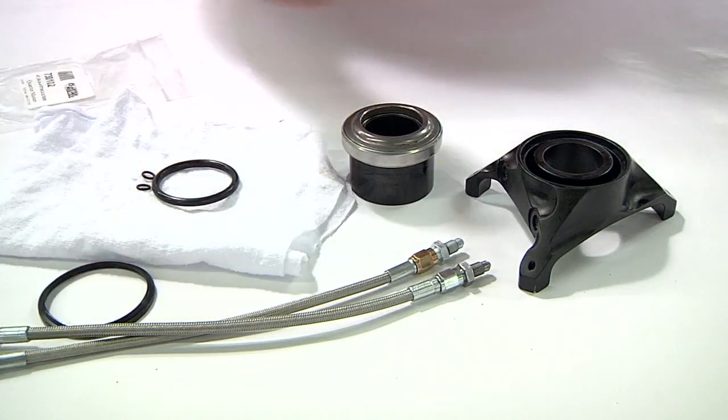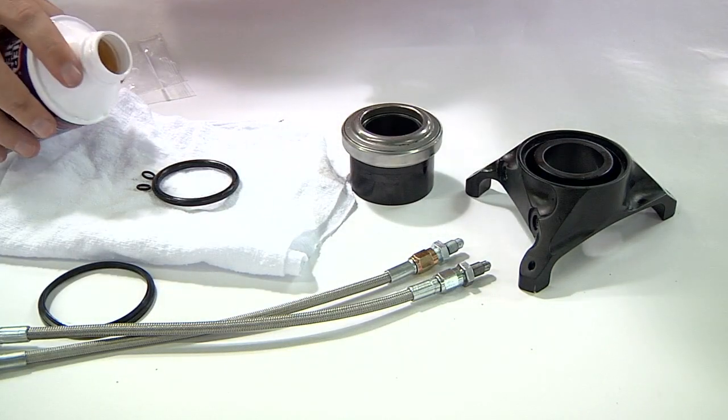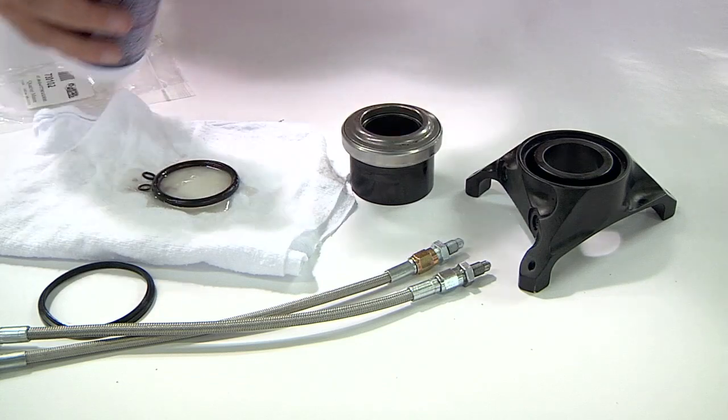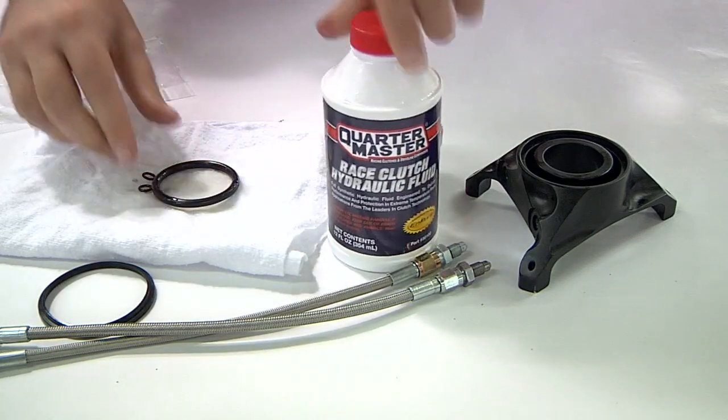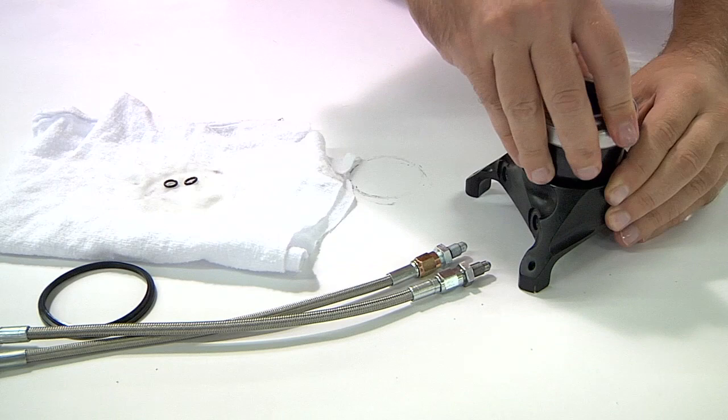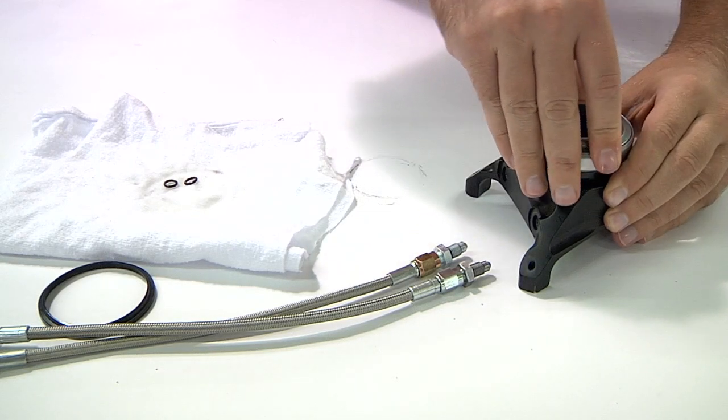Before putting the bearing back together, lubricate the new main seal and seal fittings. It is very important to thoroughly lubricate the main seal because it seals on both sides. Install the main seal using the piston to ensure that the seal sits squarely.